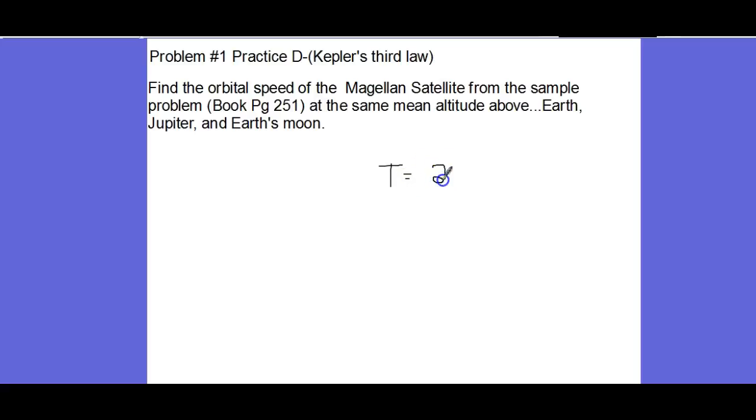The equation for this is T equals 2π, then you do square root, radius cubed, and then constant G and then the mass of the planet that's being orbited, m₀.